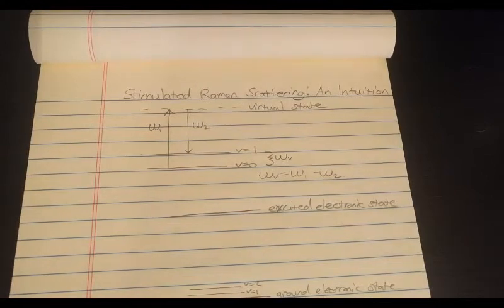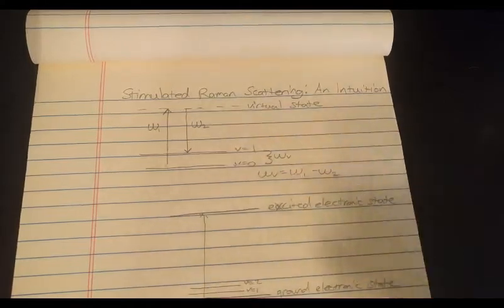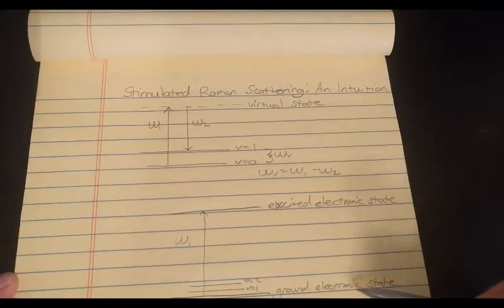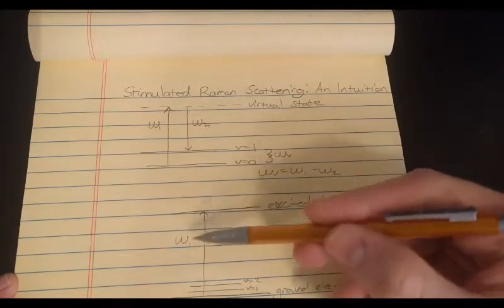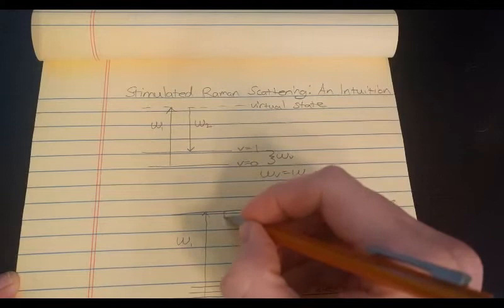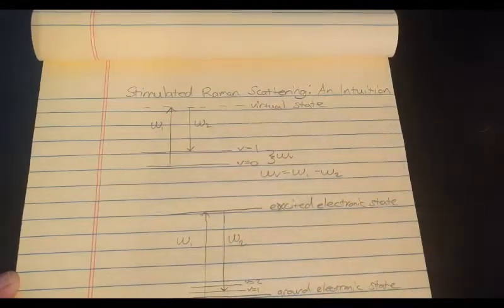So in fluorescence, fluorescence is absorption. So you send in a laser of omega one. Your molecule absorbs omega one, sits there for a little bit, and then emits omega two. And you detect omega two.